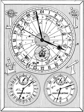Earth's rotation is not a simple rotation around an axis that would always remain parallel to itself. Earth's rotational axis itself rotates about a second axis, orthogonal to Earth's orbit, taking about 25,800 years to perform a complete rotation. This phenomenon is called the precession of the equinoxes. Because of this precession, the stars appear to move around Earth in a manner more complicated than a simple constant rotation.